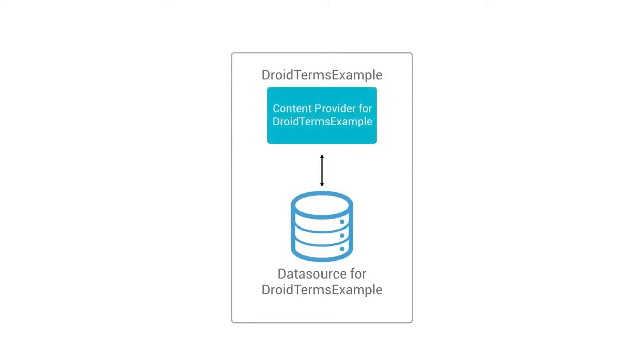But both of those apps use content providers. Instructions for downloading the app are below. Why don't we take a look at it? Droid Terms Example is pretty straightforward — it's an app for keeping track of all these Android terms you've been learning. Ever wanted to have the definition of adapters and what happens in onPause on hand?